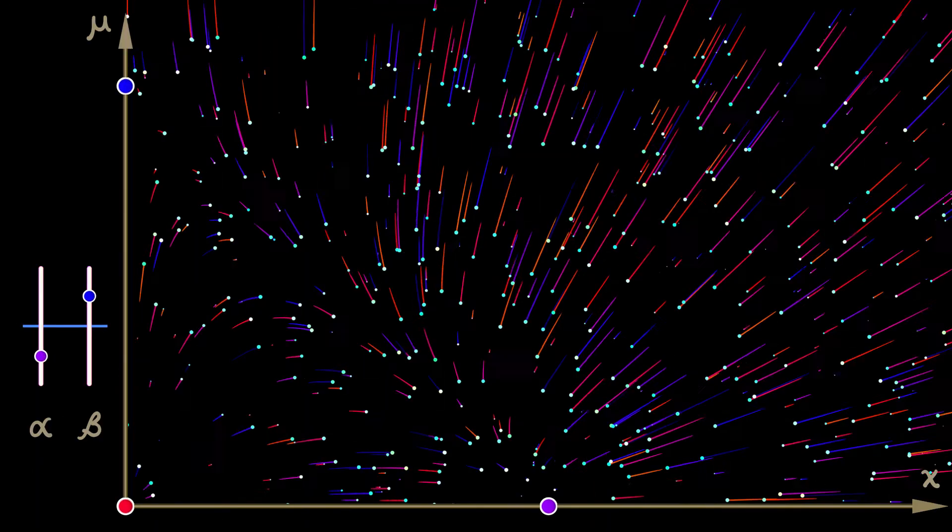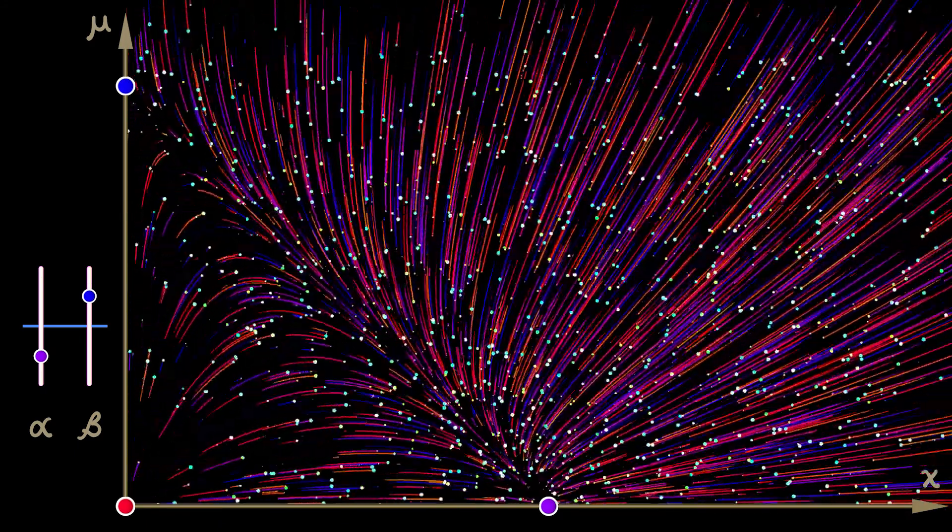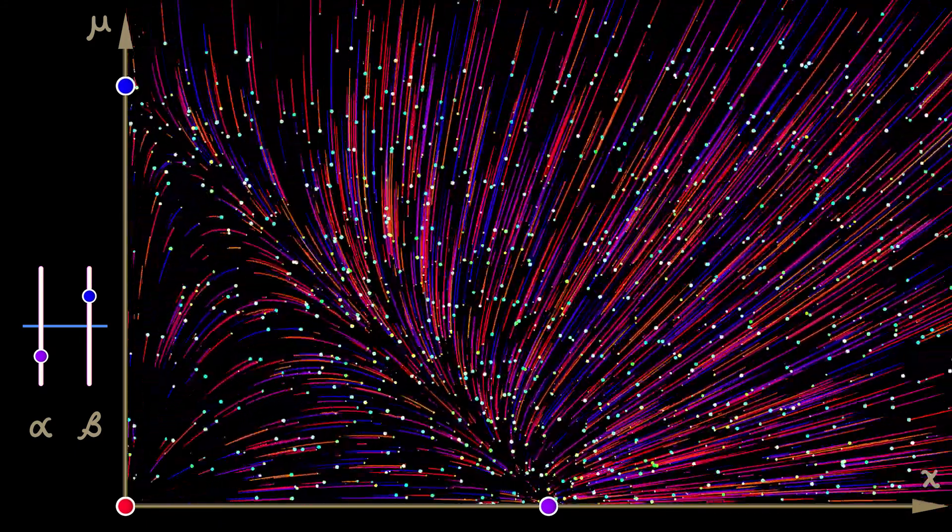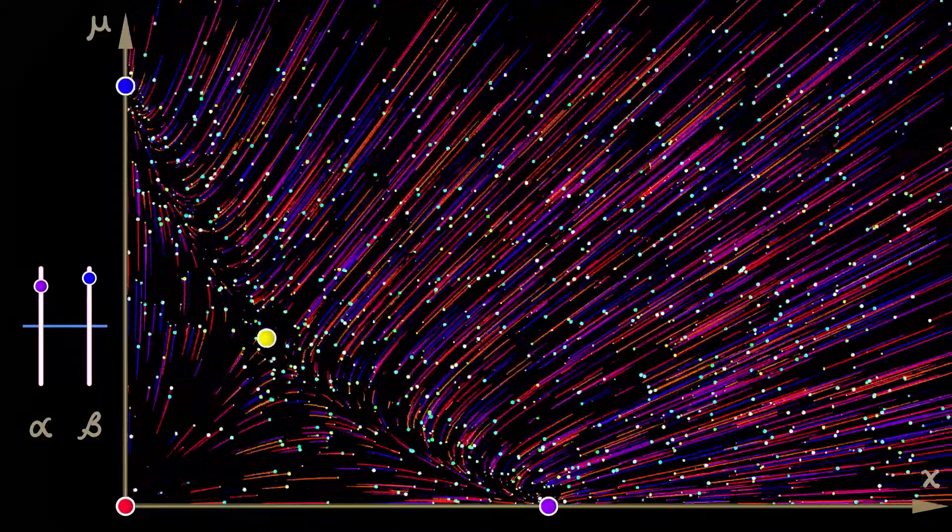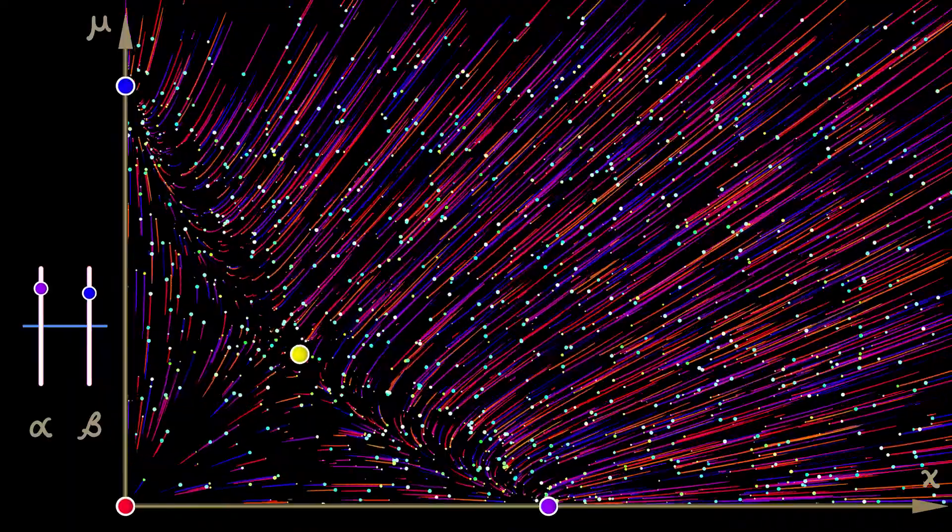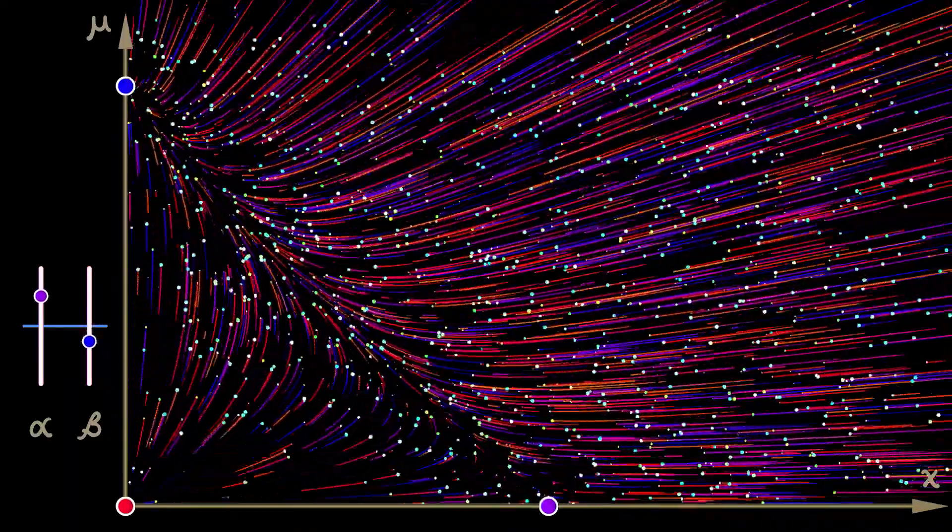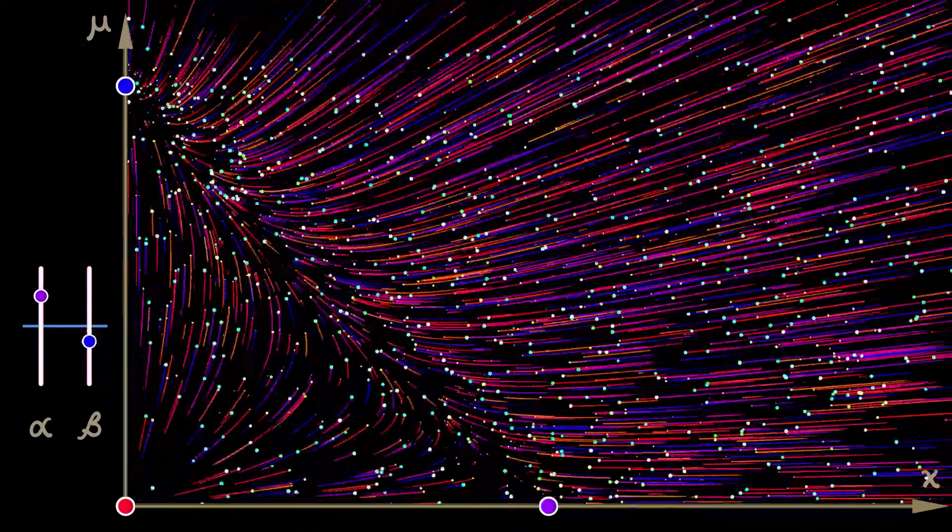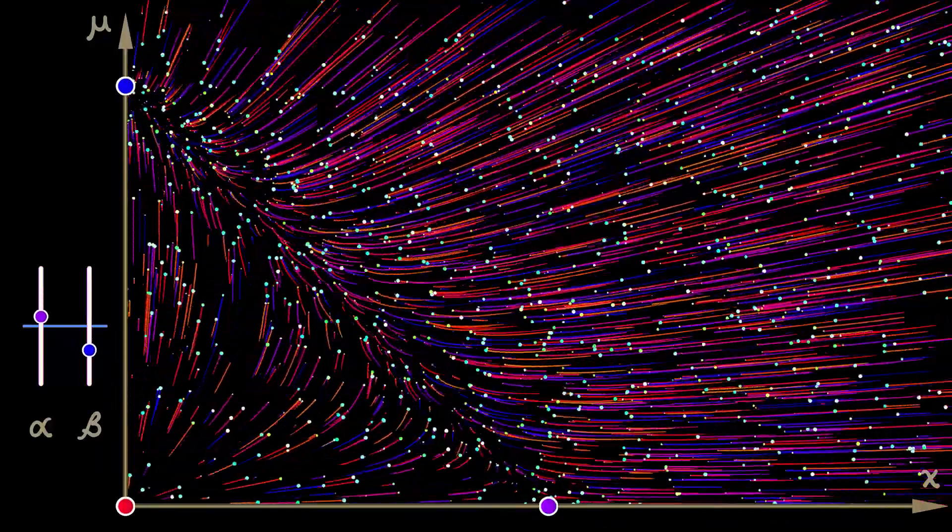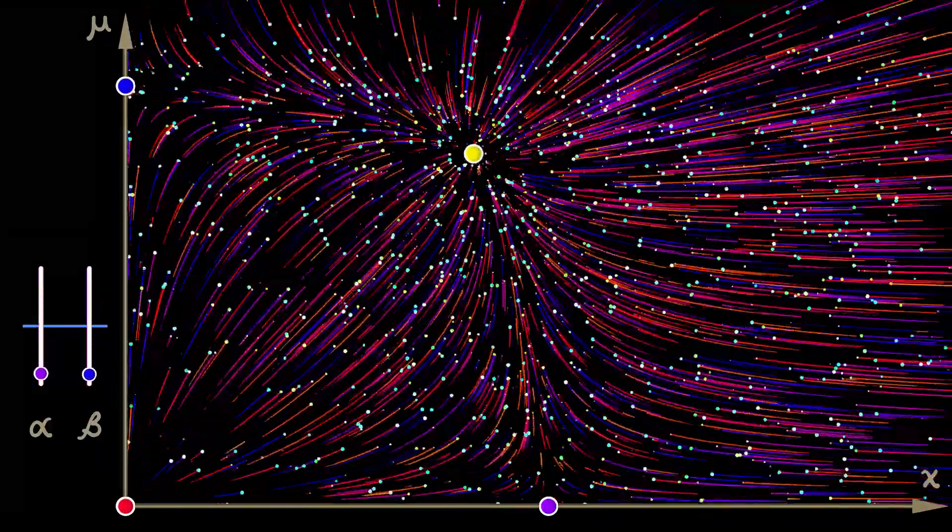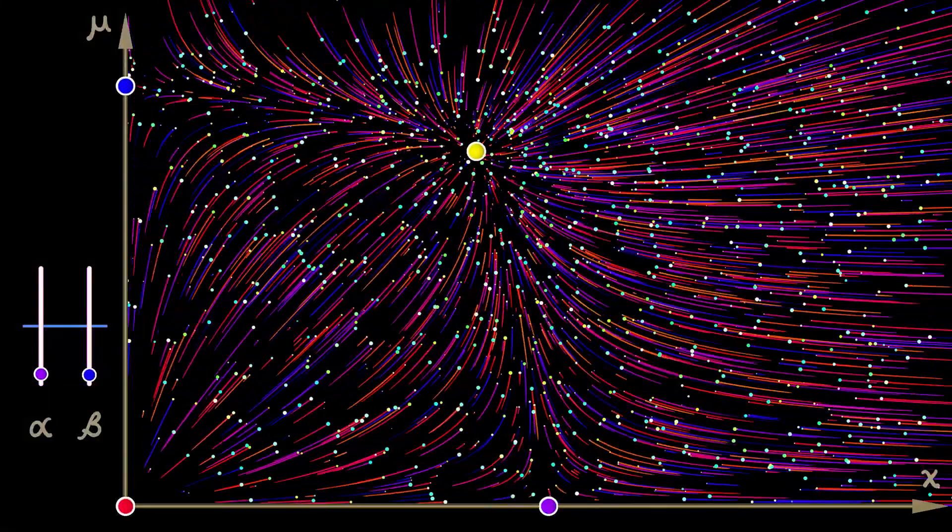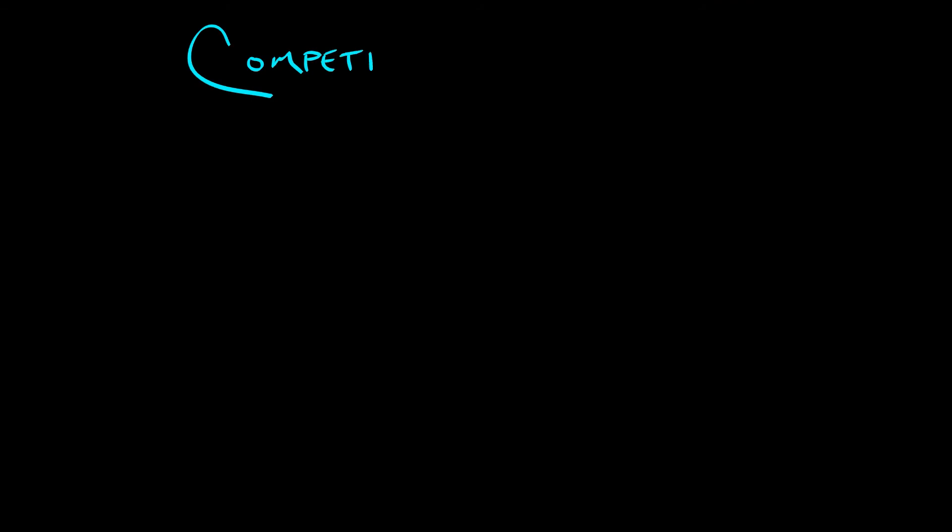There's really no substitute for just simulating the dynamics and looking at what happens for different values of alpha and beta, where you can see competitive exclusion. Or if you change those values, you can get a single winner and a single loser. Or if alpha and beta are both small, you get a cooperative equilibrium, that sink at non-zero population values. Now, you could spend a lot of time really digging into the details of the system at different parameter values.